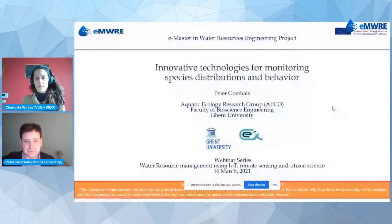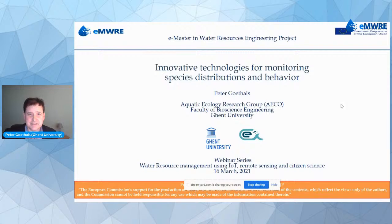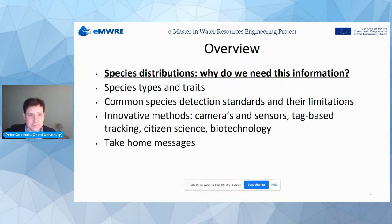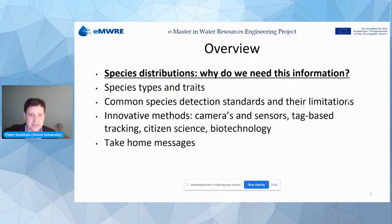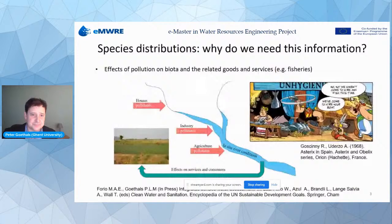Thank you, Charlotte. I will give an overview of monitoring species distributions and their behavior. My presentation covers five parts: first, the need for information about species distributions; second, different types and traits of species; third, commonly used standards and their limitations; fourth, innovative methods for species detection — including cameras and sensors, tech-based tracking systems, citizen science, and biotechnology; and finally, take-home messages.